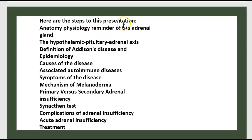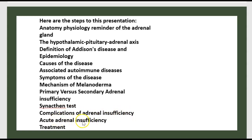Here are the steps to this presentation: anatomy and physiology — a reminder of the adrenal gland and the hypothalamic-pituitary-adrenal axis; definition of Addison's disease; epidemiology; cause of the disease; associated autoimmune diseases; symptoms; mechanism of melanoderma; primary versus secondary adrenal insufficiency; Synacthen test; complications of adrenal insufficiency; acute adrenal insufficiency; and treatment.